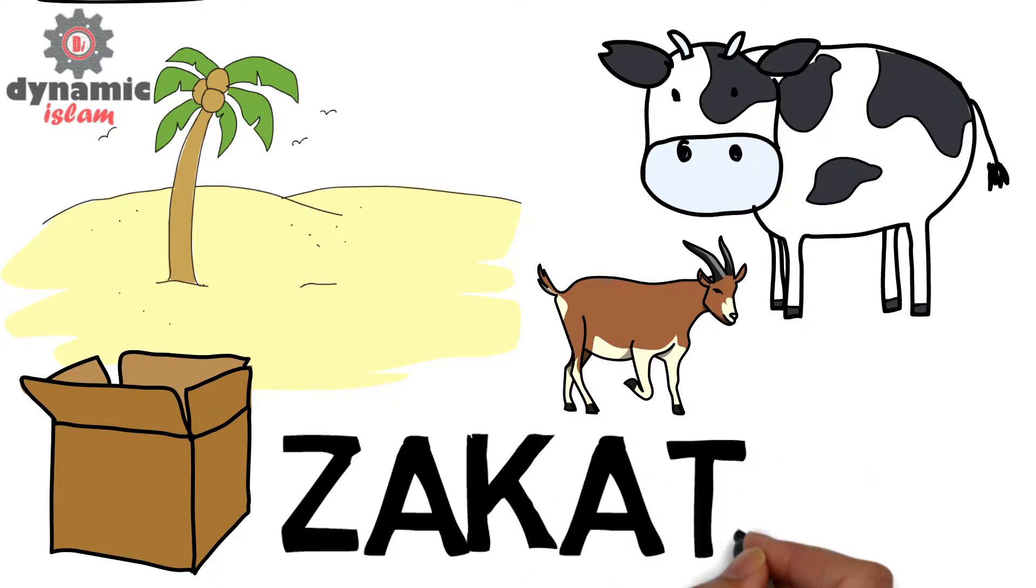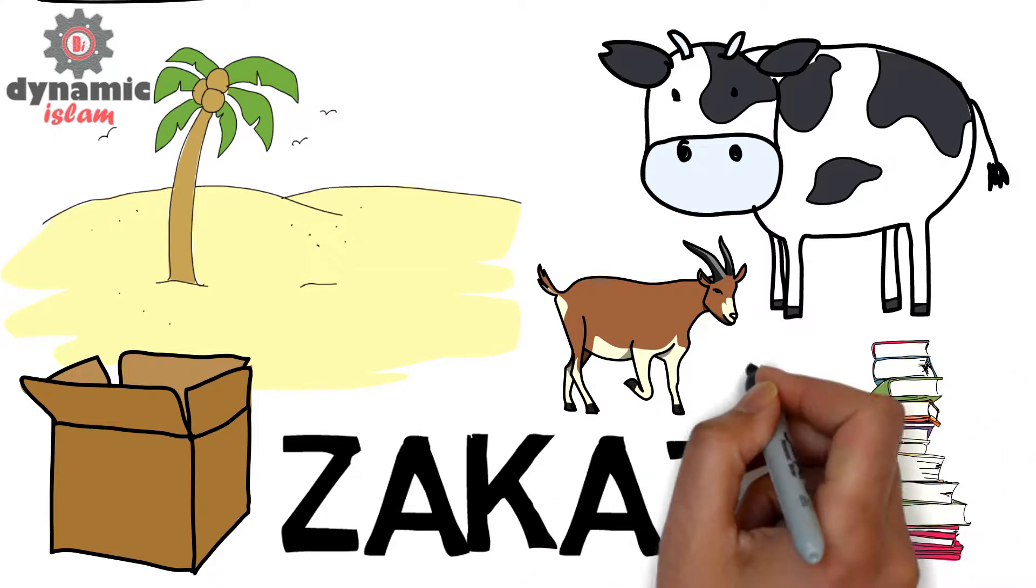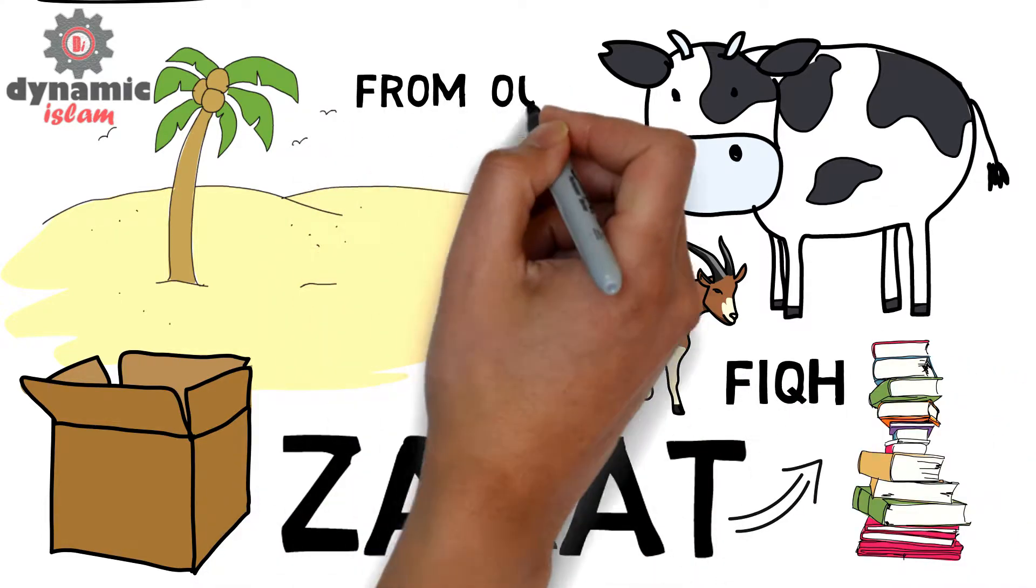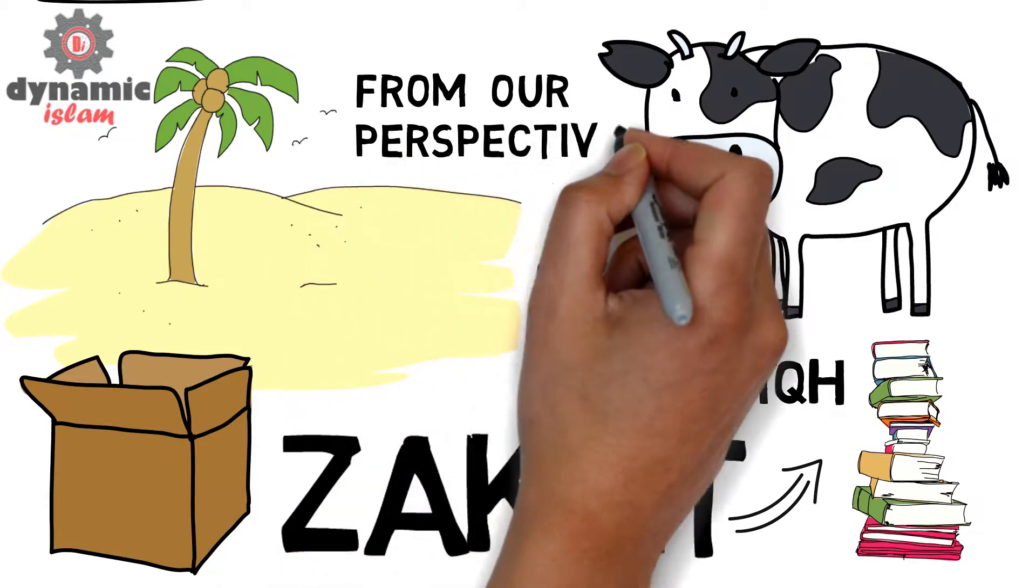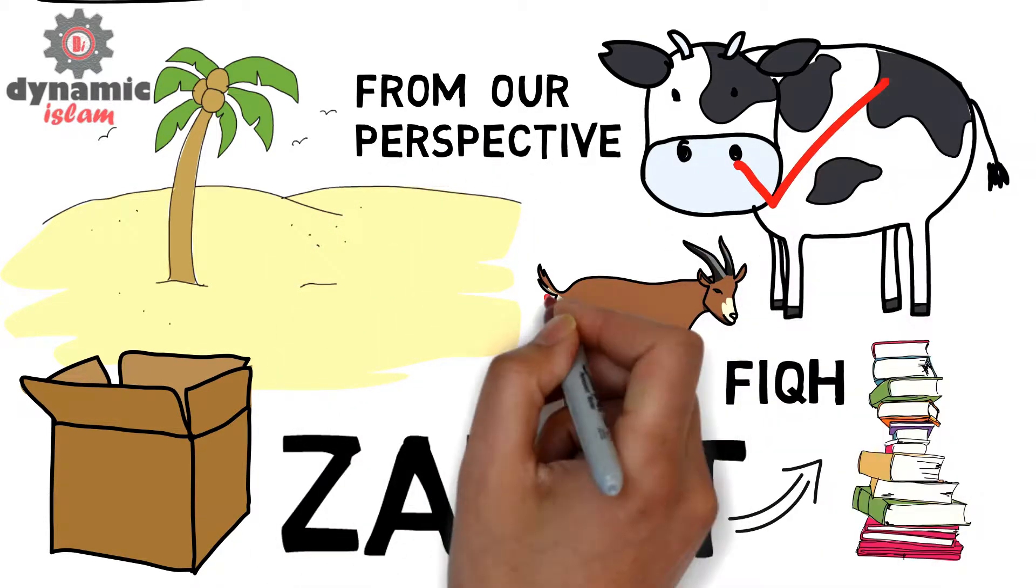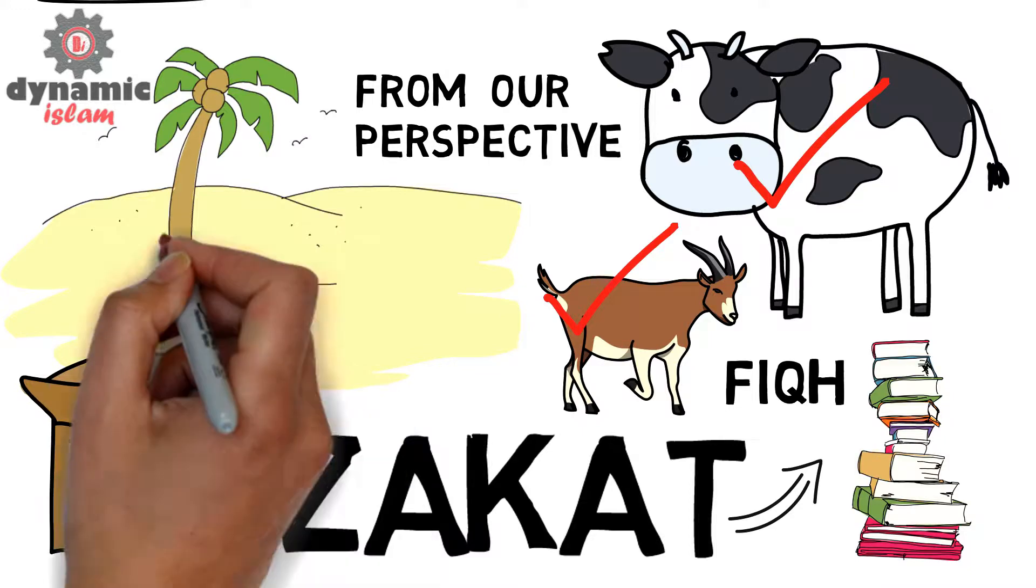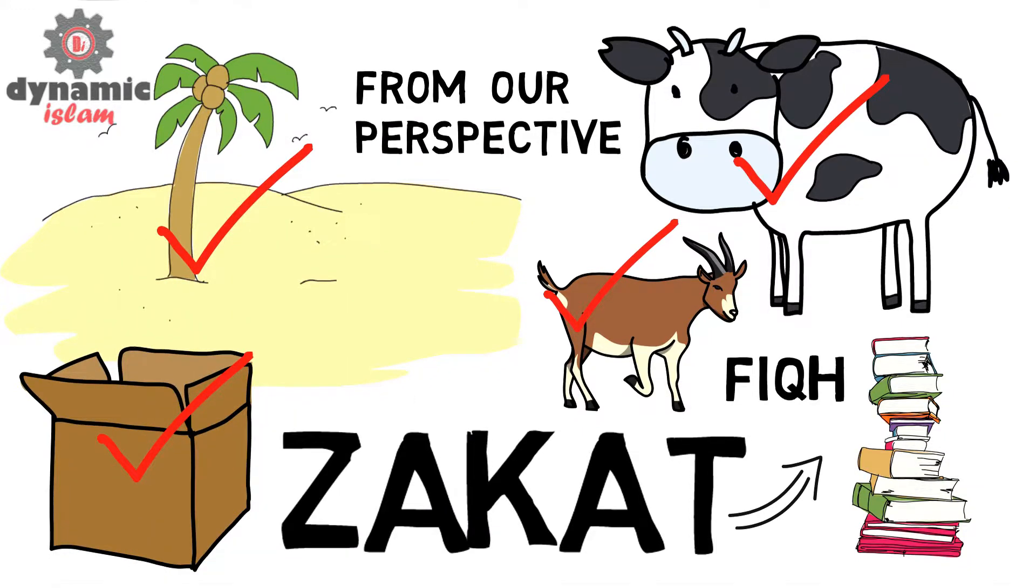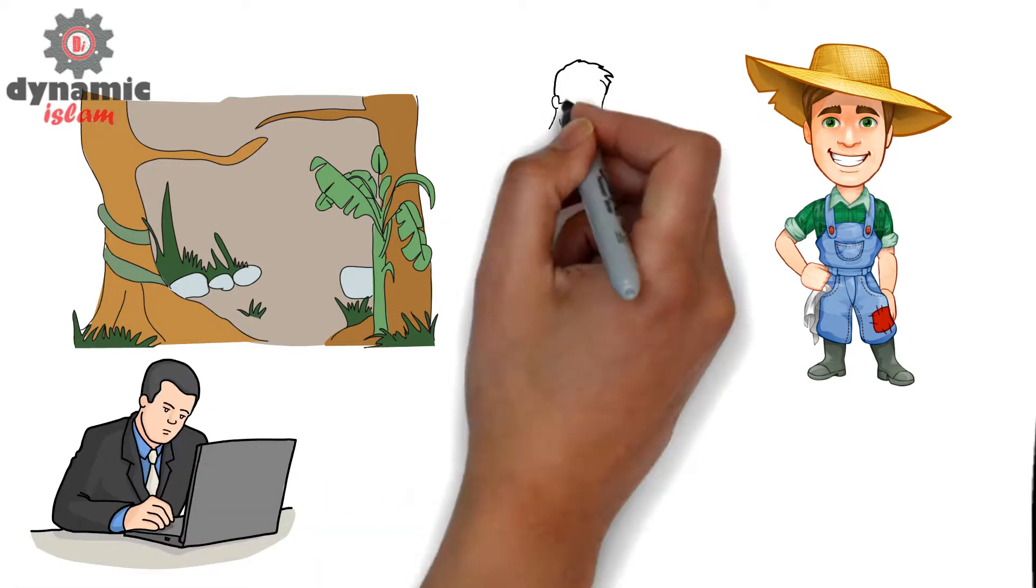These are the types of categories that we find in the books of fiqh when it comes to zakat. So from our perspective, wealth is not just the cash that we own, it's also other investments that may take place. And this can include for the farmers, it includes their livestock. For people who own land, it includes the lands that they own.